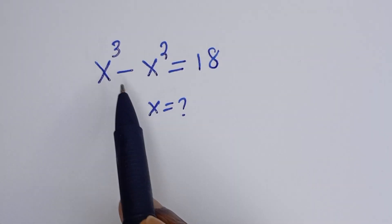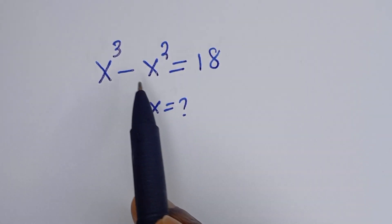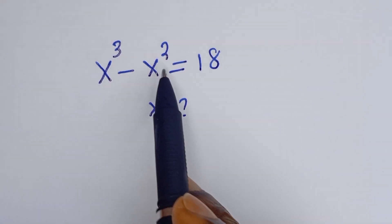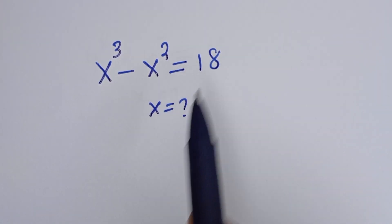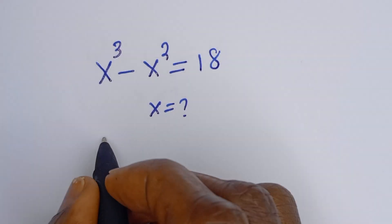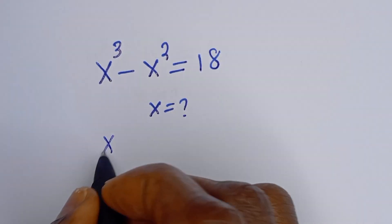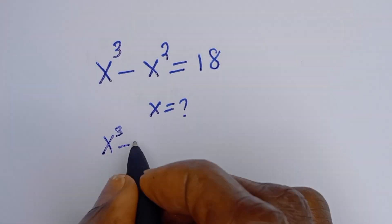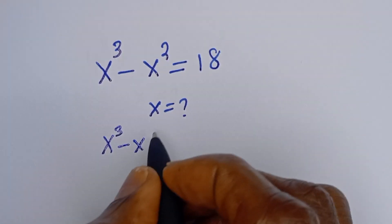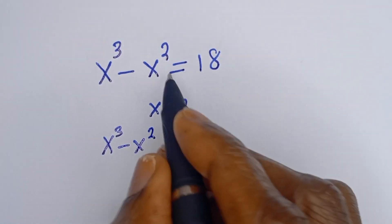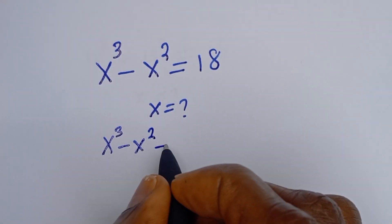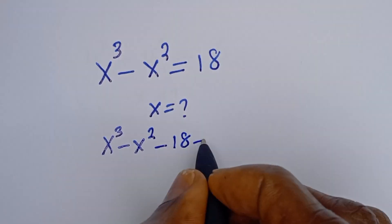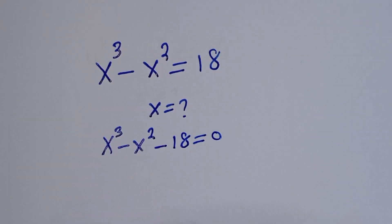Hello. How to solve for s in this equation: s to the power of 3 minus s squared is equal to 18. We have s to the power of 3 minus s squared, and if you bring 18 to this side, s cubed minus s squared minus 18 is equal to 0.